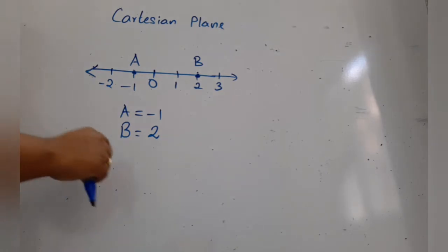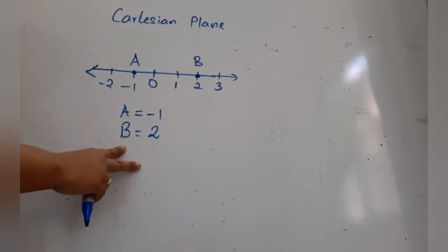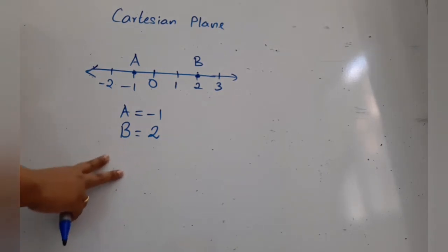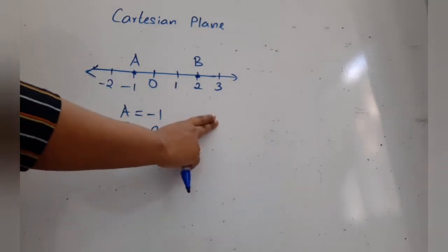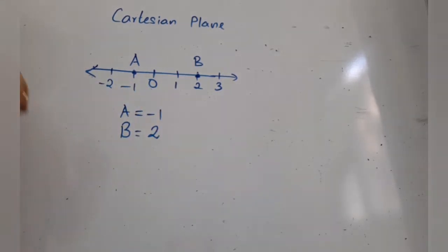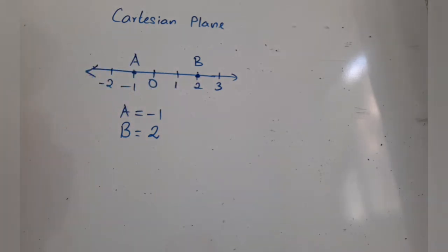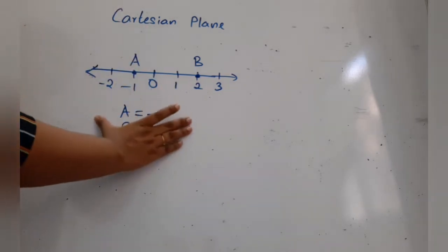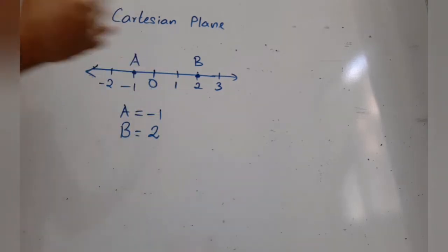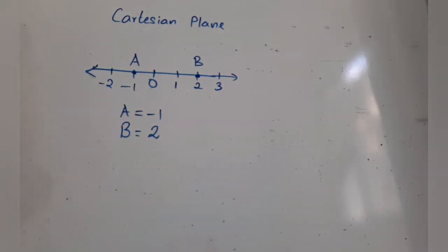This is what you learned in grade 6 — how to draw a number line. In real life we can see the number line in a measuring cup, a thermometer, and many other places. Now, based on this, we are going to learn about the Cartesian plane.